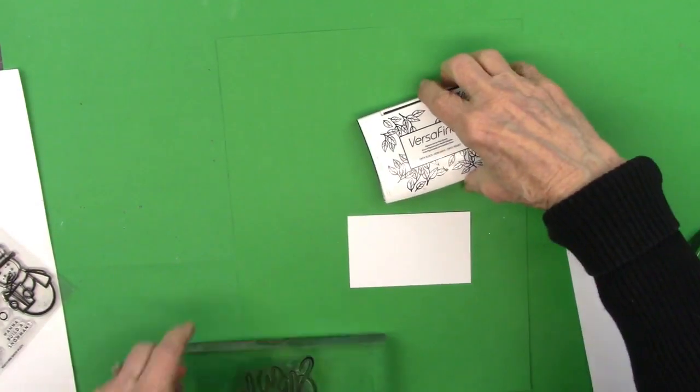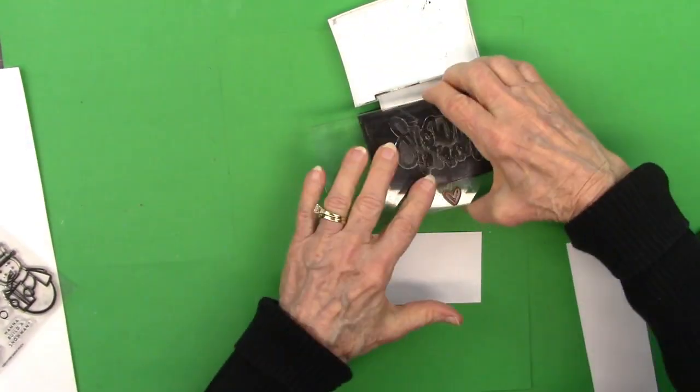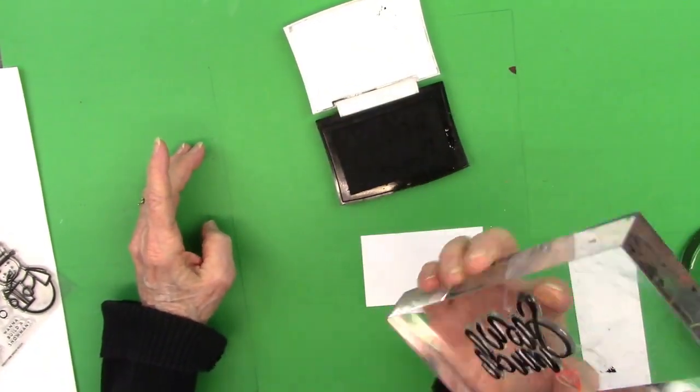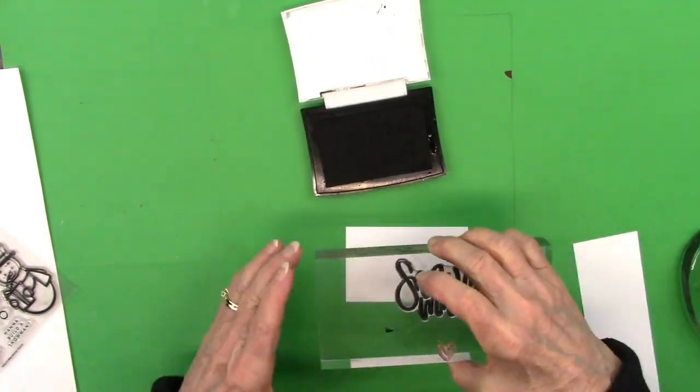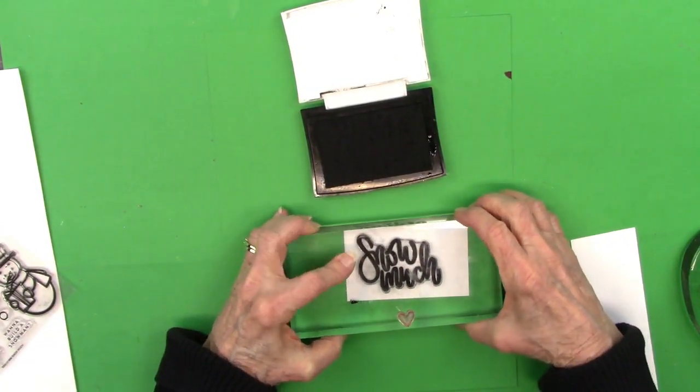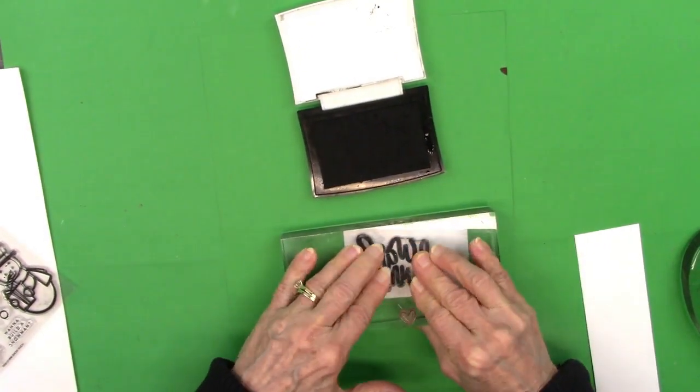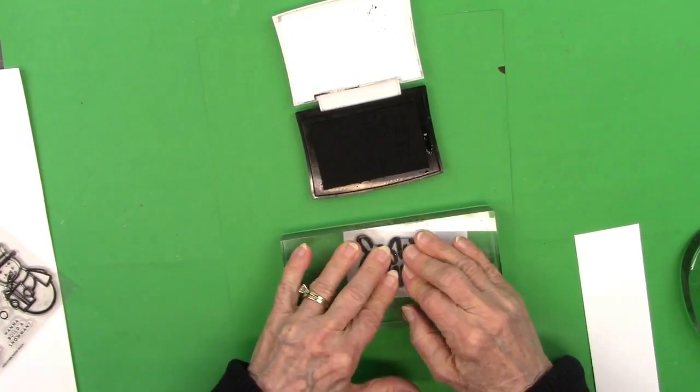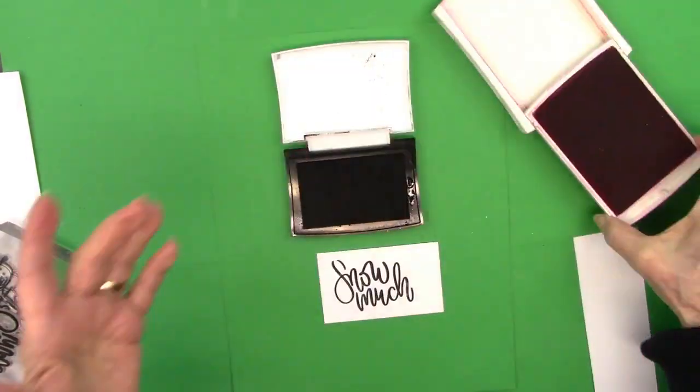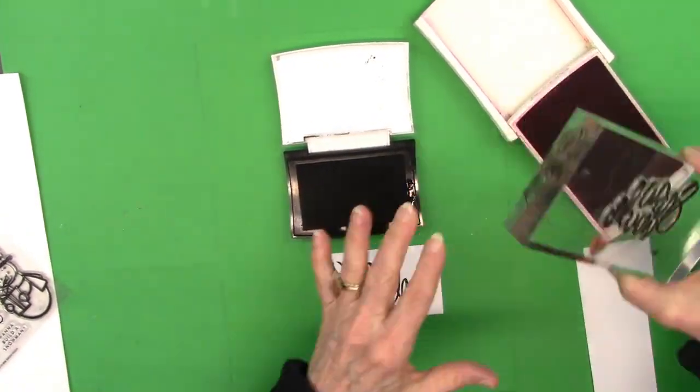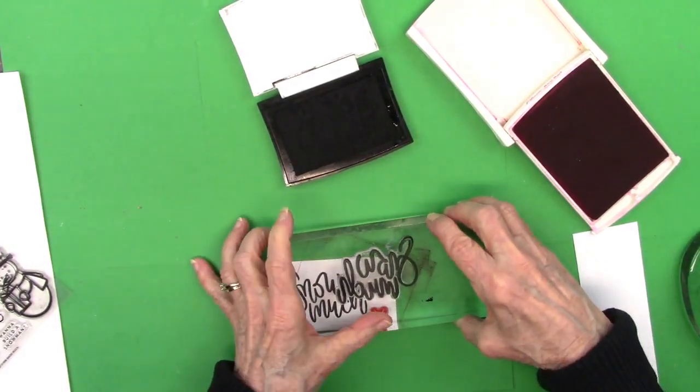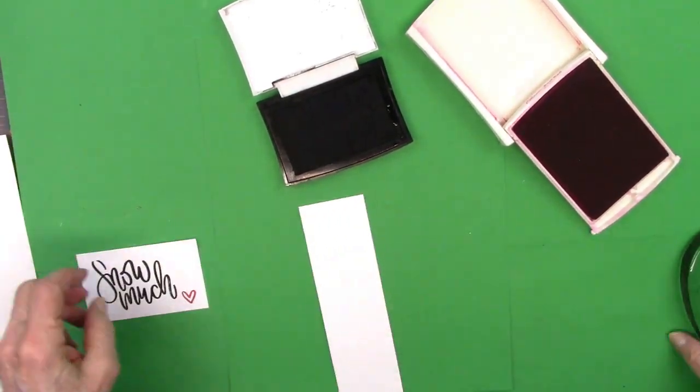Now we're going to stamp with the Snowmuch stamp set from Simon Says. I'm going to stamp the sentiment Snowmuch with Onyx Black ink by Versafine. Then I'll go back and use a little bitty heart stamp in this kit with a bright red, true red color. I'm putting it down at the bottom and considering that to say Snowmuch love.